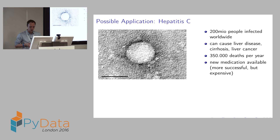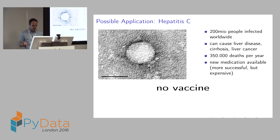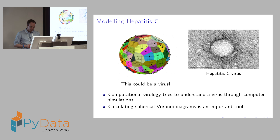There is new medication available, so someone infected with access to modern medical healthcare can get medication, which is mostly successful but very expensive. It would be much better to tackle this before it arises. For hepatitis A and B there is a vaccination, but for hepatitis C there is currently no vaccine available, so you cannot stop this infection from spreading by means of a vaccine. The diagram shown could really be a virus — it is roughly a sphere, and the generator points on that sphere roughly correspond to proteins attached to the virus.